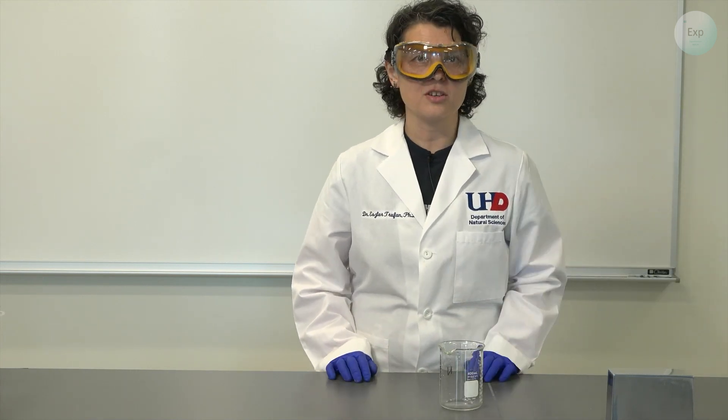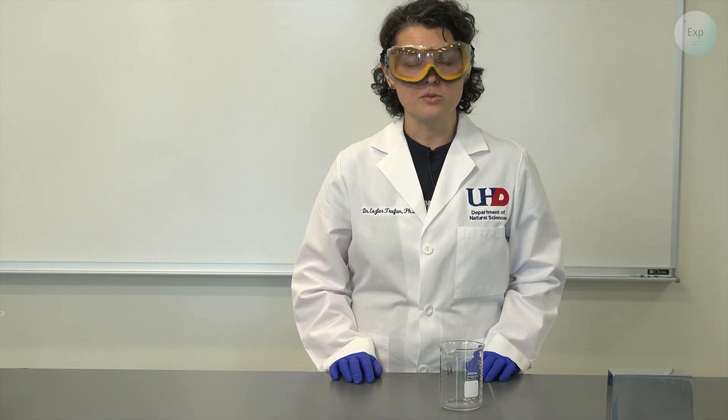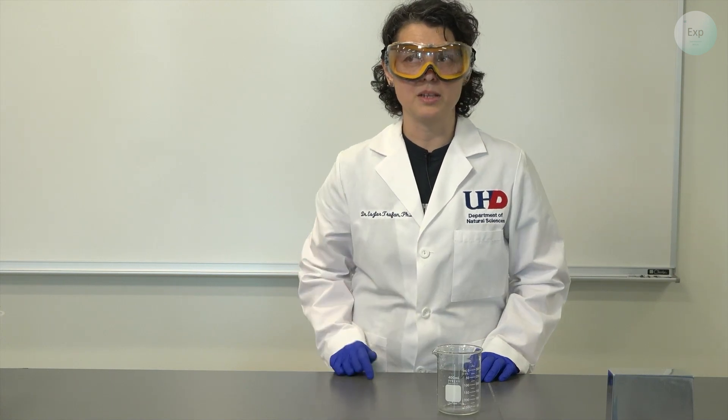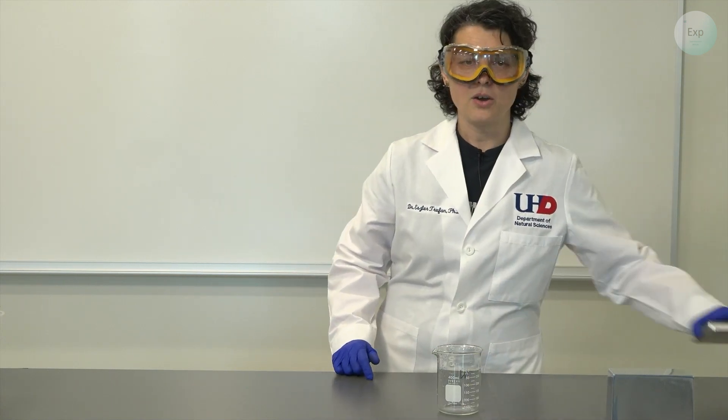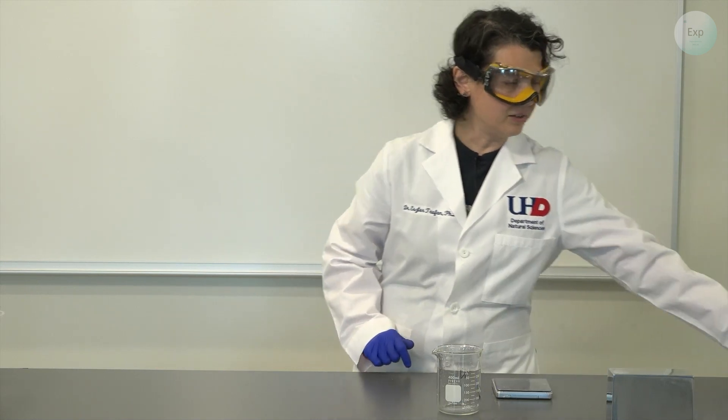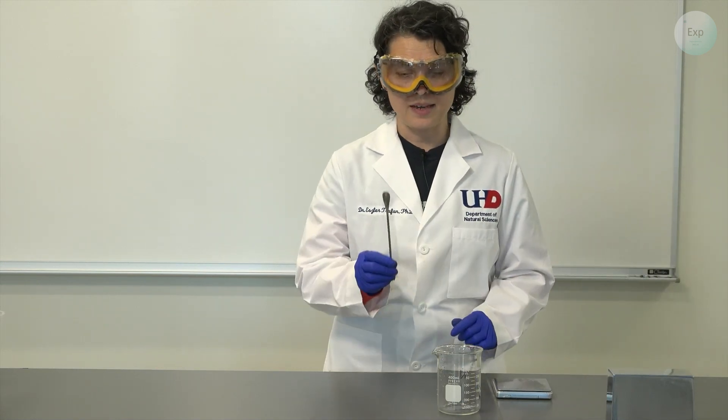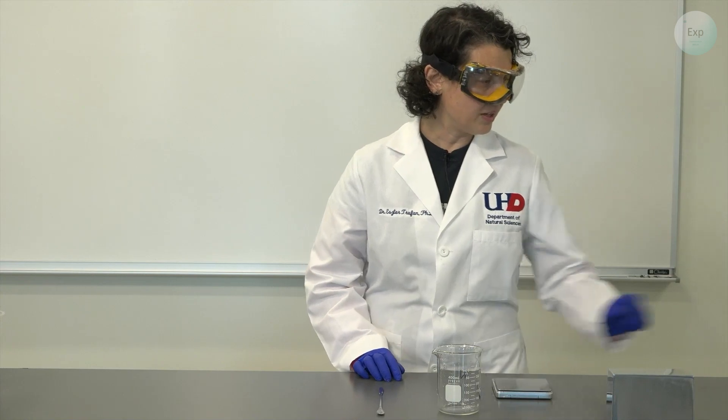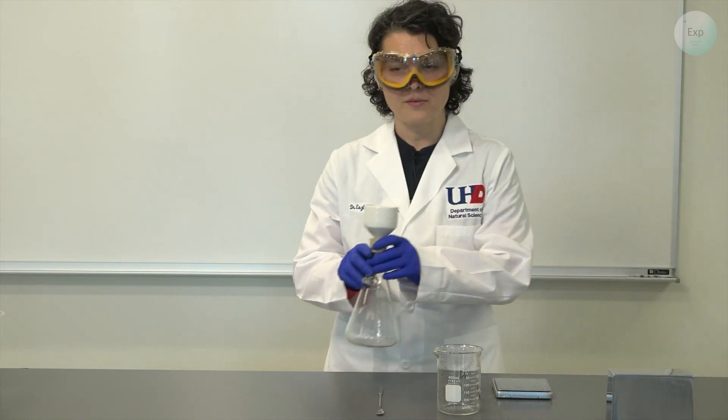The first thing we're going to need is a large enough beaker to contain our solution. I'm going to use a 400 milliliter beaker. I need to know how much alum I'm going to add so I will bring in a scale. I will need to scoop out the alum so I will need a spatula.